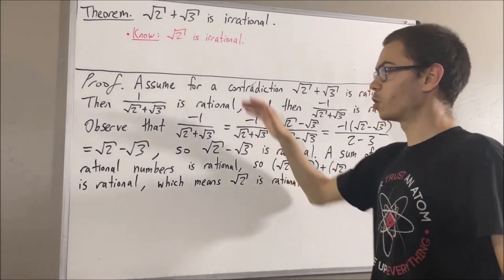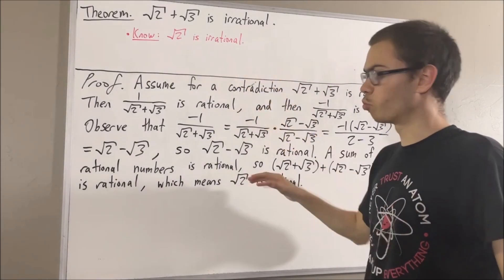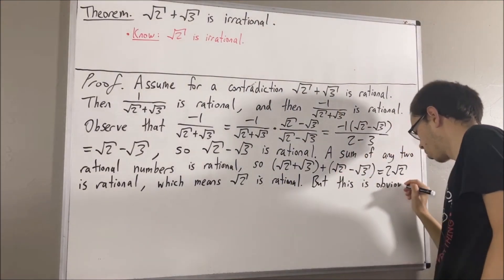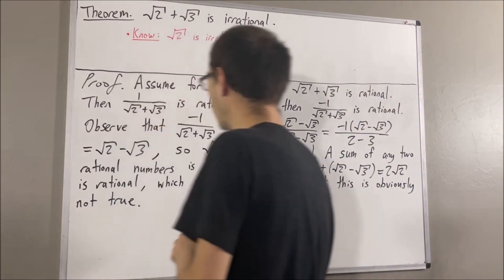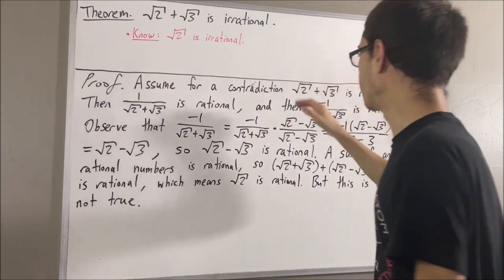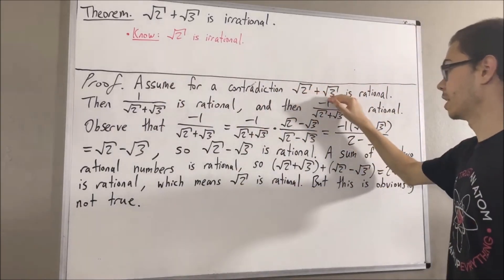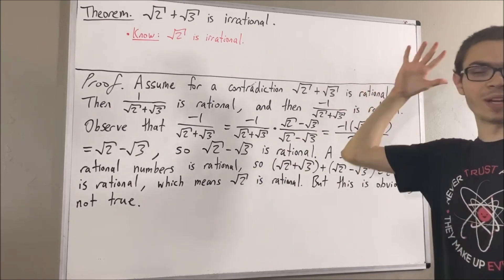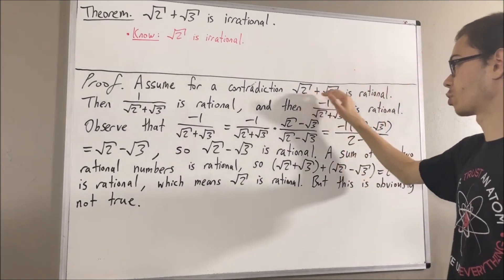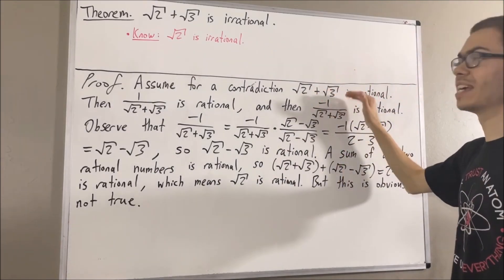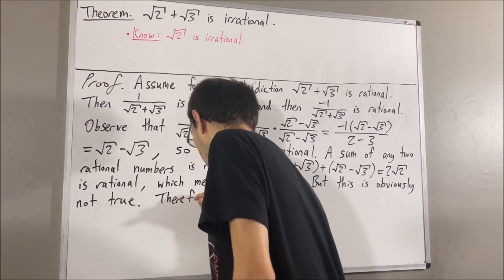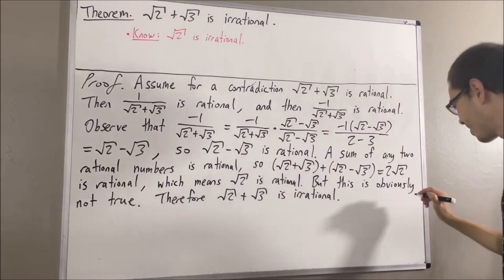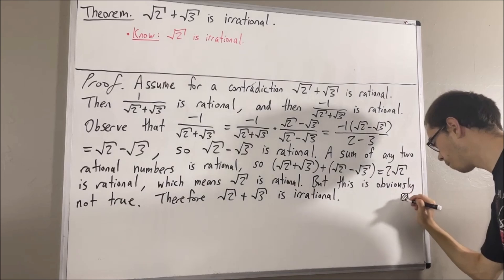But square root of 2 is also irrational. So we've reached a contradiction. Our assumption that square root of 2 plus square root of 3 is rational leads to a contradiction. So we must instead have that the square root of 2 plus the square root of 3 is irrational. This completes the proof.